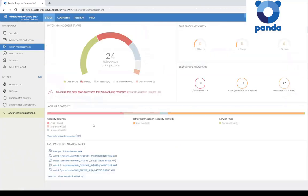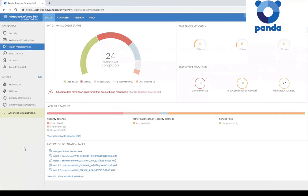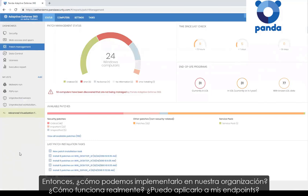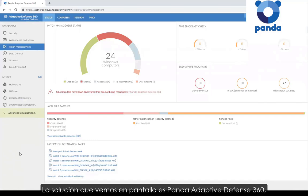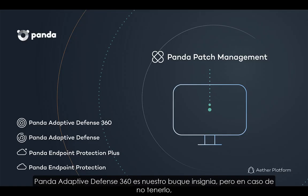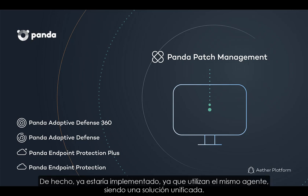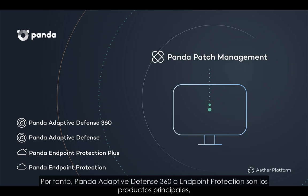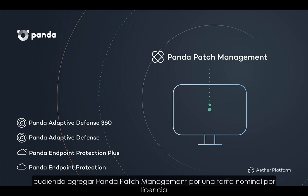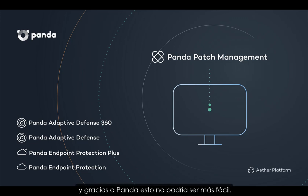This is a really quick and easy way for IT administrators to get on top of the headache of making sure all patching is up to date. It gives you an immediate audit of all patches that are available and outstanding, and an easy way to implement them remotely and immediately over the internet. So how do you implement this? If you already have one of our core products — the flagship being Adaptive Defense 360, but also Endpoint Protection or Endpoint Protection Plus — you already have everything you need. In fact, it's already implemented. We use the same agent, so it's a unified solution. You can add on patch management for a nominal fee per license and have access to that part of the console to configure and deploy all of your patching requirements. It really could not be any easier.